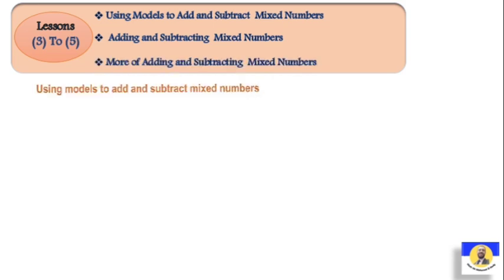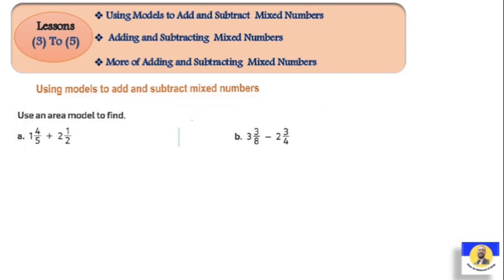We learned adding and subtracting mixed numbers before, but in today's new lesson we're talking about unlike denominators. First I'll explain using the models method - how we can do it by drawing. Then we'll learn the standard method, just like we did in Unit 7 with fractions.